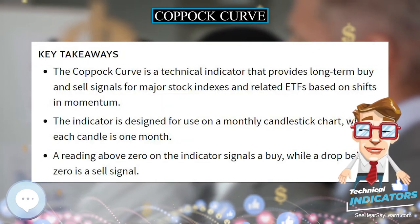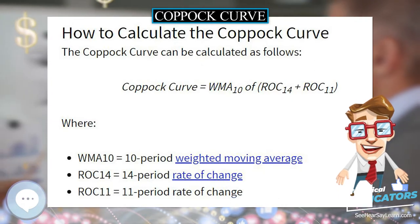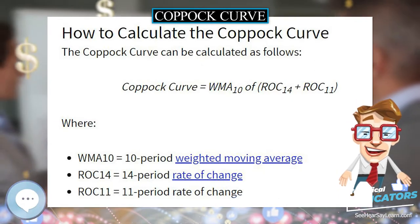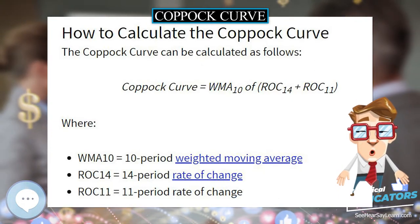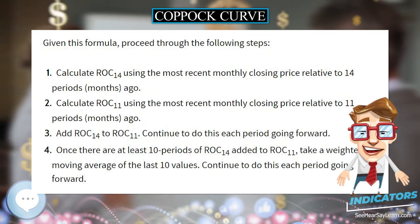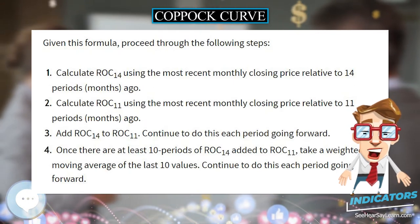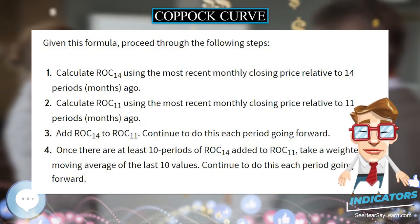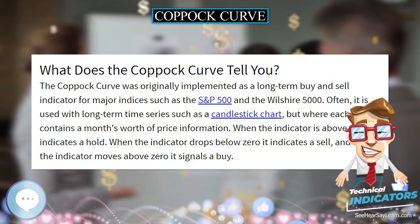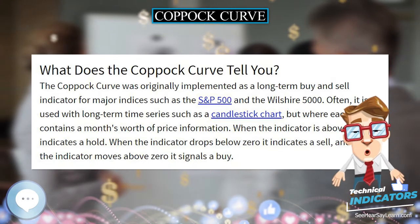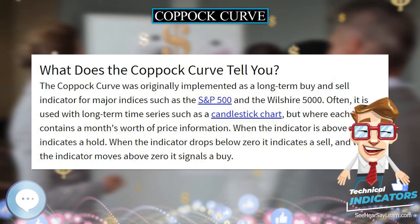Although designed for monthly use, a daily calculation over the same period can be made, converting the periods to 294-day and 231-day rates of change, and a 210-day weighted moving average.